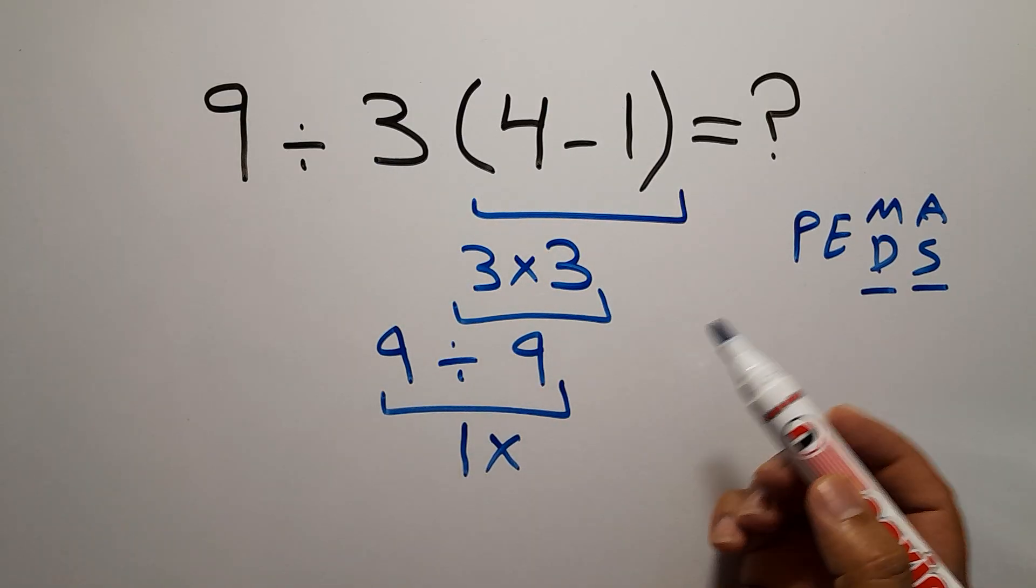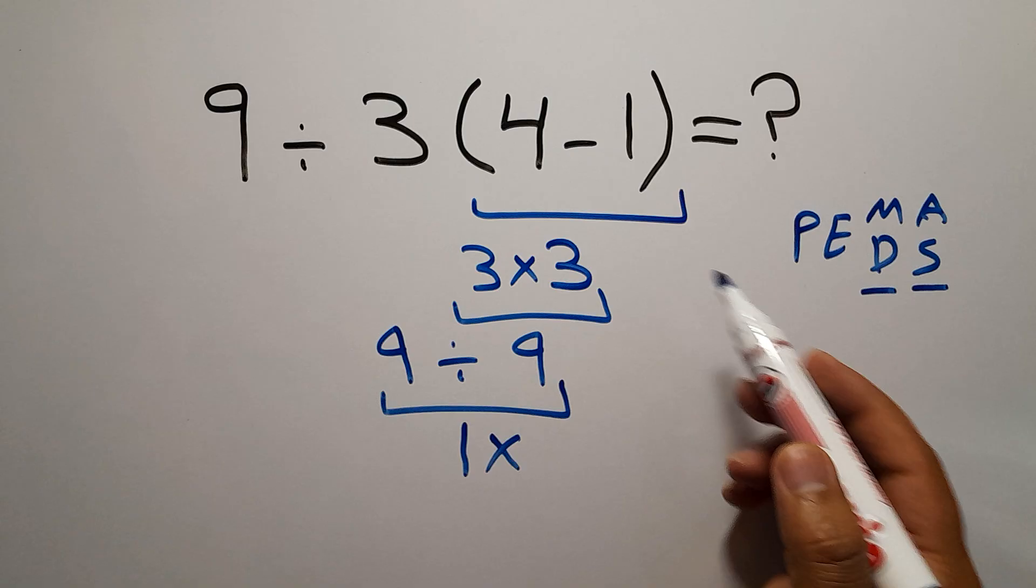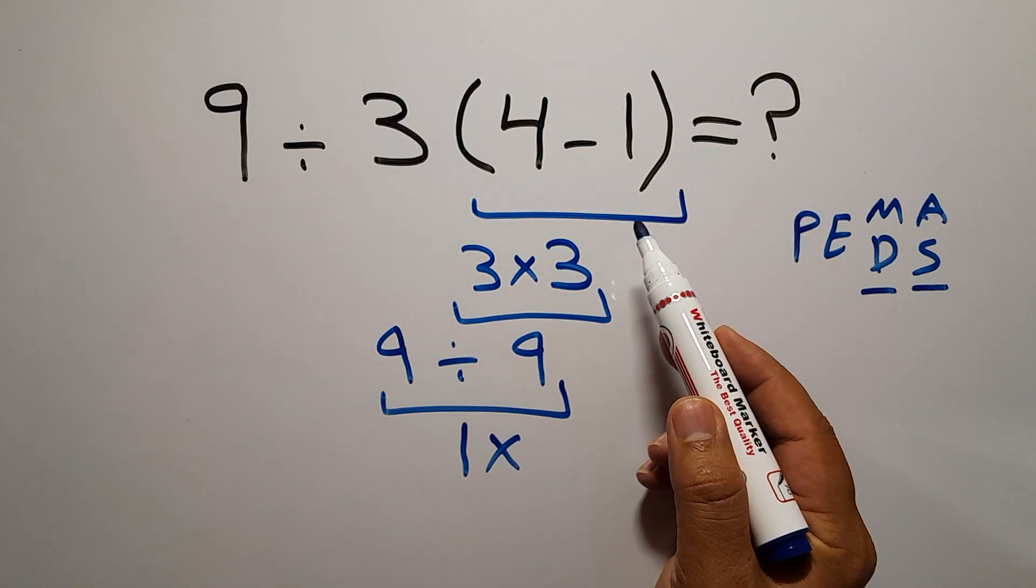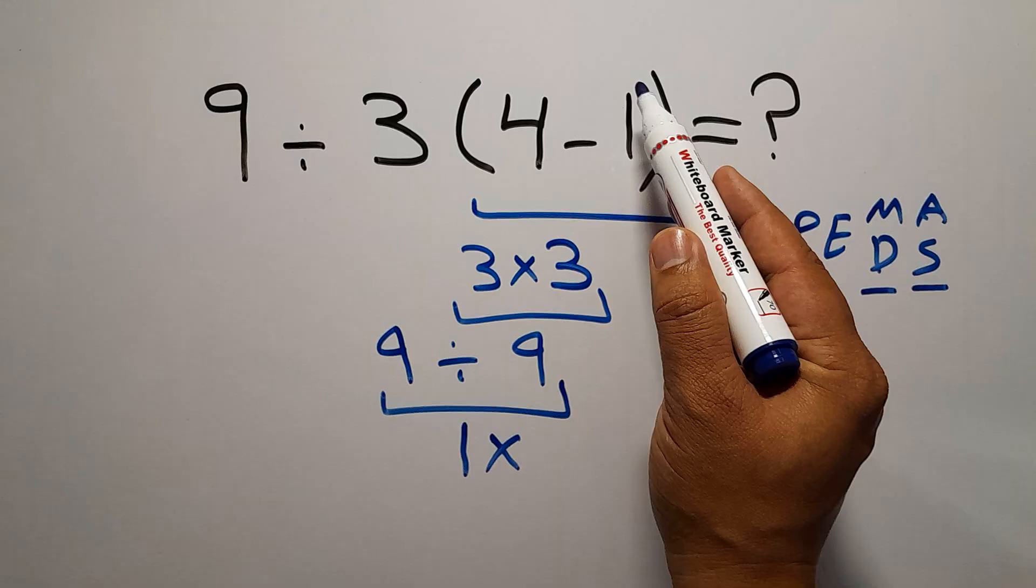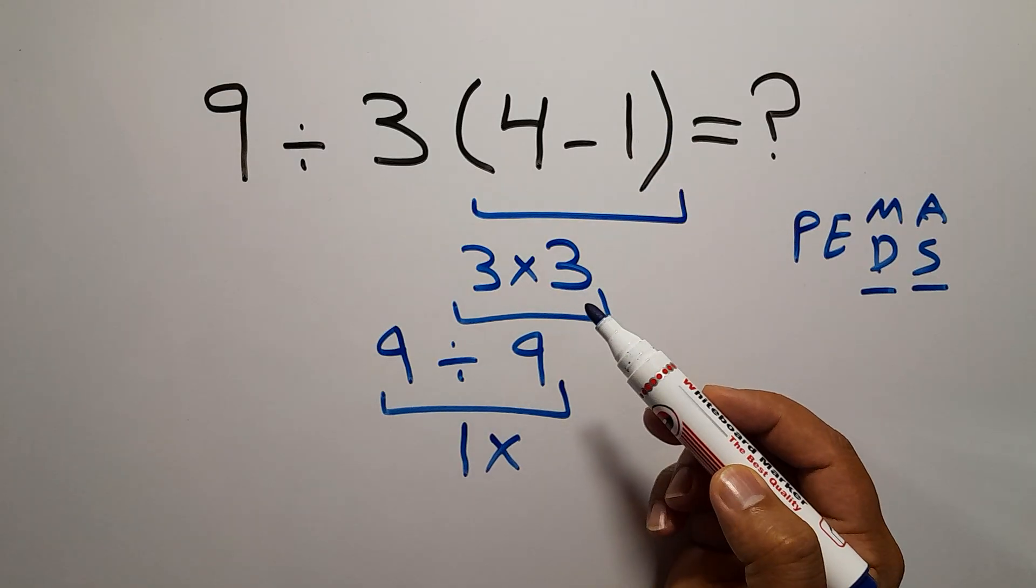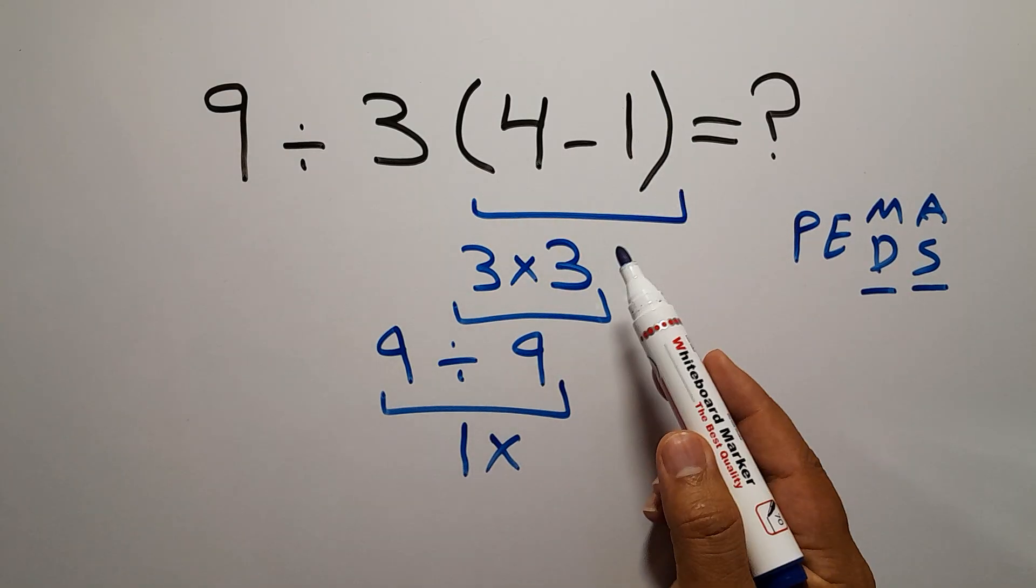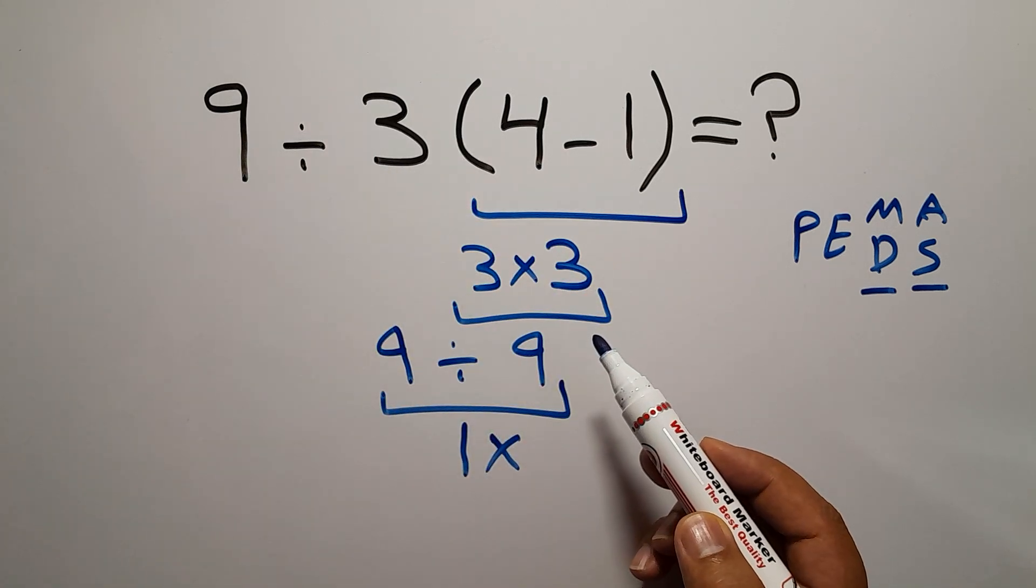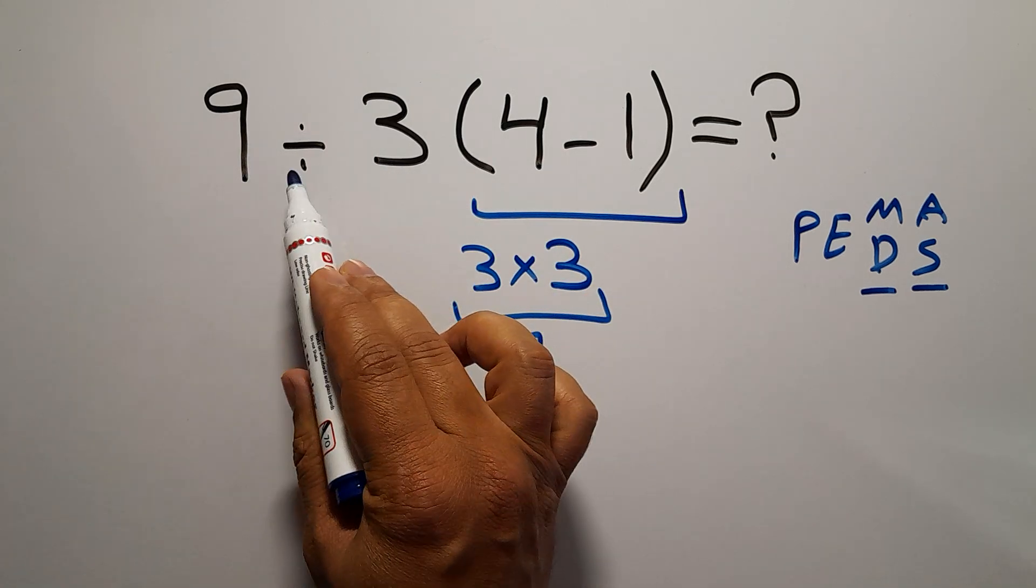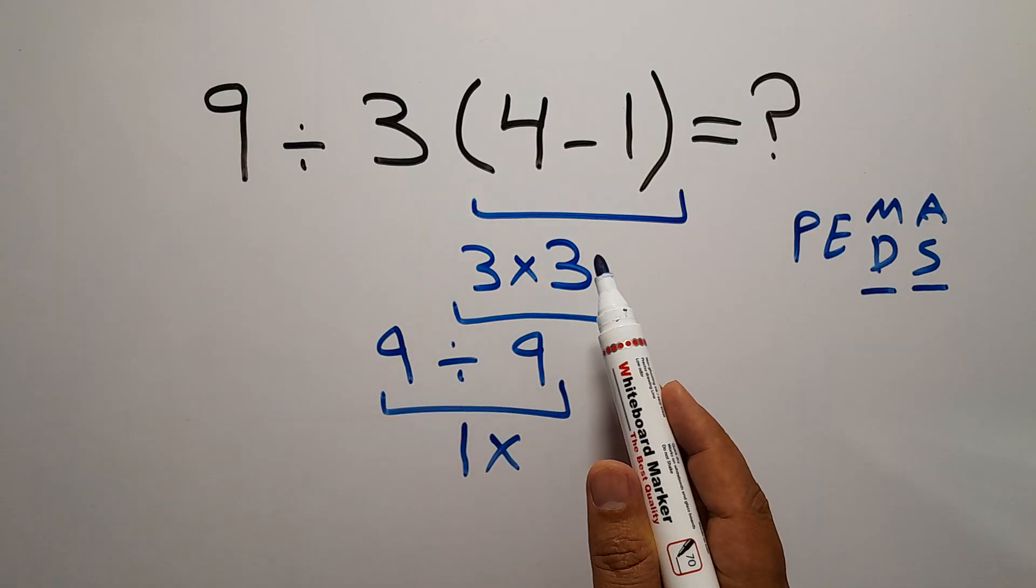So first we have to do this parentheses. After this parentheses, we have one division and one multiplication. As I said, multiplication and division have equal priority.